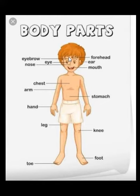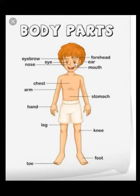Now next are eyes. How many eyes do we have? Correct! We have two eyes. And above the eyes, there are eyebrows. With eyes, we can see everything around us.